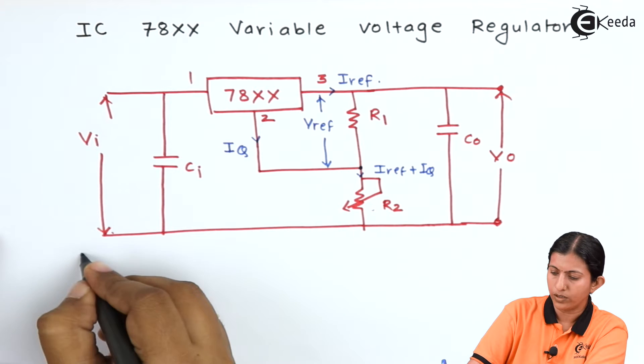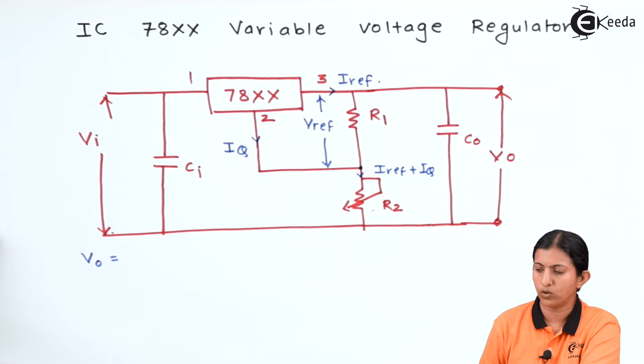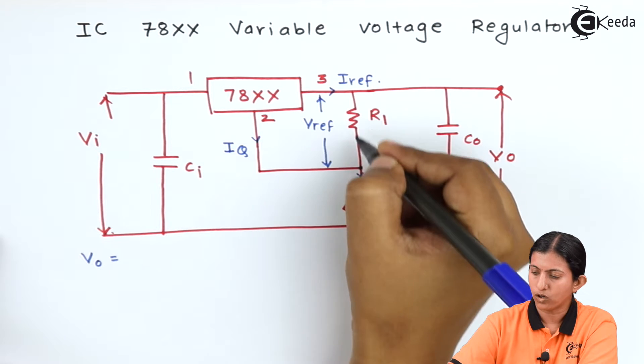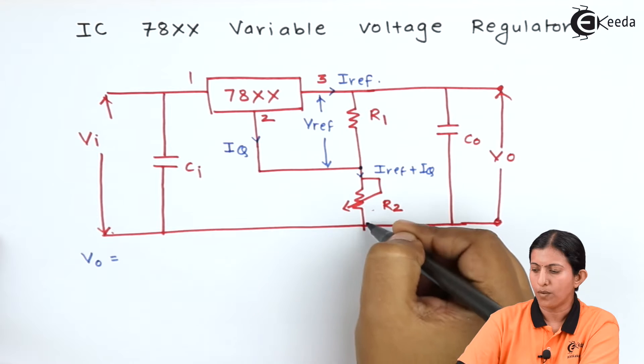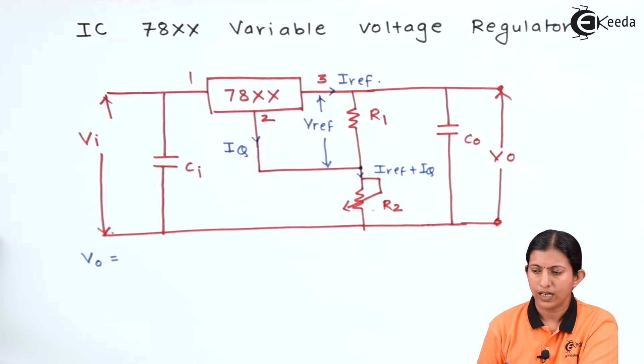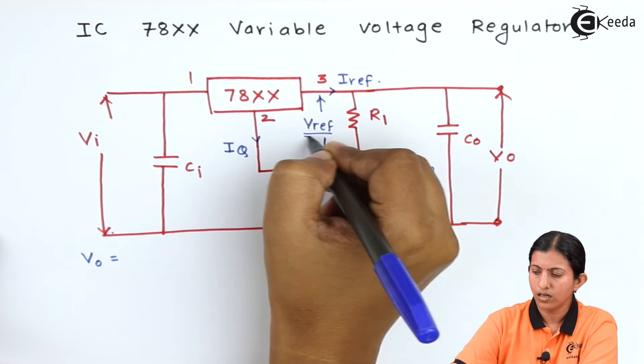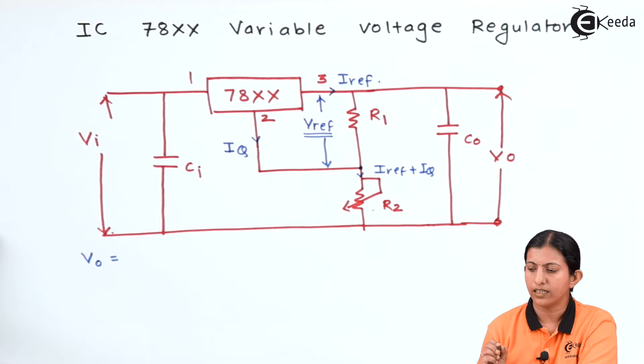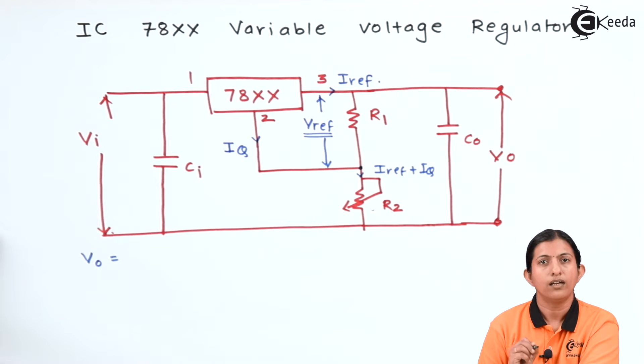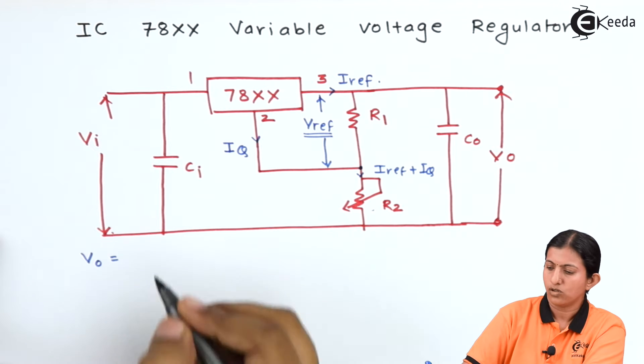What is the output voltage? Vo equals the voltage drop across R1 and the voltage drop across R2. The voltage drop across R1 equals the reference voltage and is based on the part number.